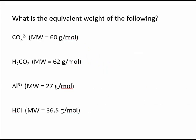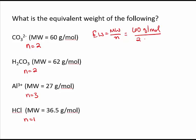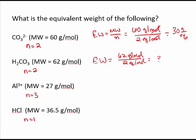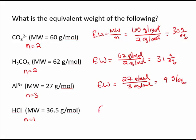For practice: what is the equivalent weight of the following compounds? The equivalent number for carbonate is 2, carbonic acid is 2, aluminum is 3, and hydrochloric acid is 1. Equivalent weight equals molecular weight divided by n. For carbonate: 60 g/mol ÷ 2 eq/mol = 30 g/eq. For carbonic acid: 62 g/mol ÷ 2 eq/mol = 31 g/eq. For aluminum: 27 g/mol ÷ 3 eq/mol = 9 g/eq. For hydrochloric acid: 36.5 g/mol ÷ 1 eq/mol = 36.5 g/eq.